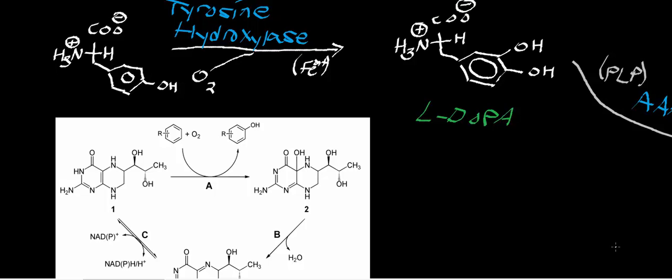Welcome back. In this video, we're going to look at an alternate way to degrade tyrosine. In a previous video, we looked at tyrosine catabolism and saw how we degrade it to energy — to fumarate and two acetyl-CoA molecules. But in this one, we're actually going to degrade tyrosine to something else that can be used for a reason other than energy production.